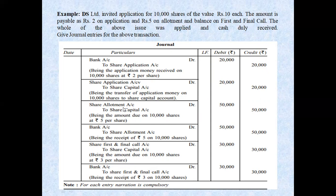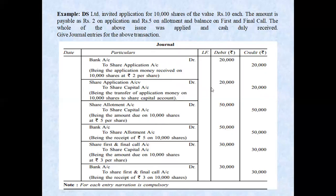Application money entry: bank account debit to share application — 2 rupees × 10,000 = 20,000 rupees. Transfer to share capital: share application account debit to share capital account — 20,000 rupees. Allotment money due: share allotment account debit to share capital account — 5 × 10,000 = 50,000 rupees. On receipt: bank account debit to share allotment account — 50,000 rupees. First and final call due: share first and final call account debit to share capital account — 3 rupees × 10,000 = 30,000 rupees. On receipt: bank account debit to share first and final call account — 30,000 rupees.